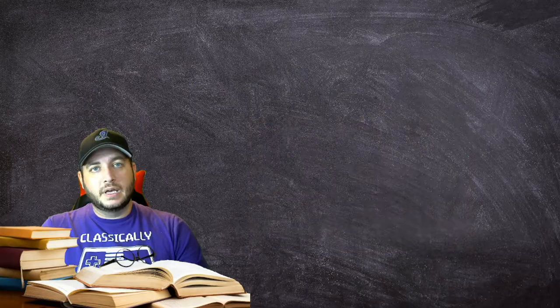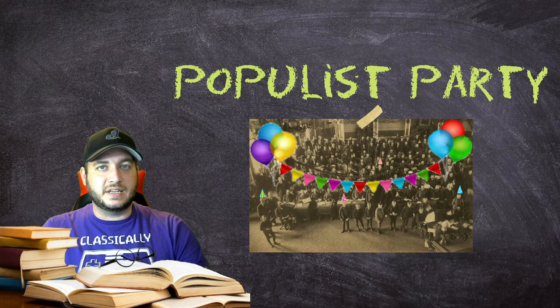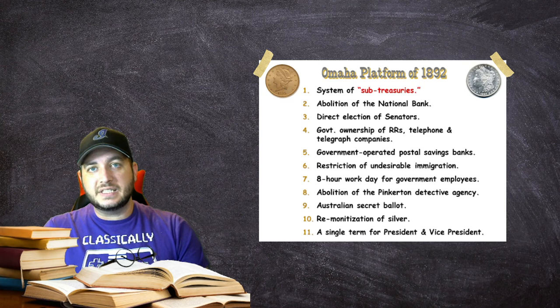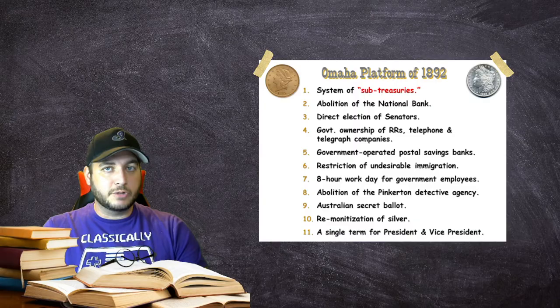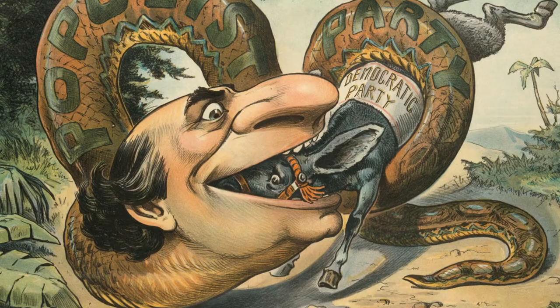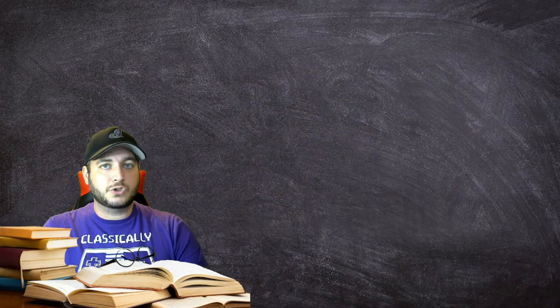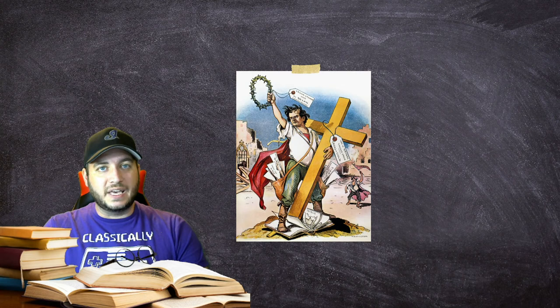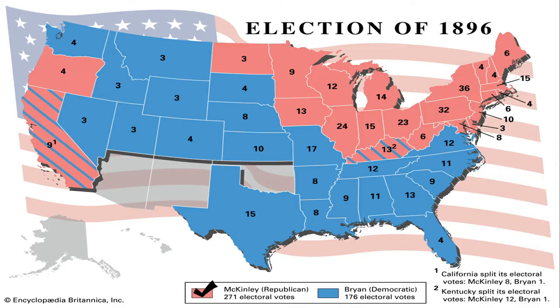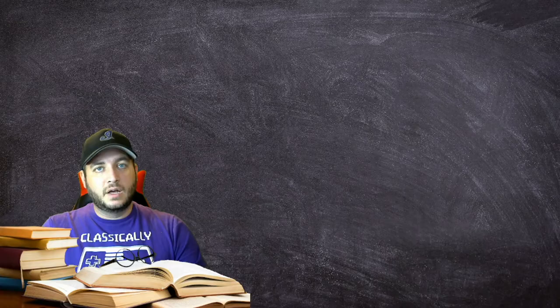The Populist Party was formed in the early 1890s to represent the interests of farmers and workers. The Omaha Platform of 1892 included far-reaching proposals later adopted, such as the direct election of U.S. Senators, a progressive income tax, the eight-hour workday, and restrictions on immigration. In 1896, William Jennings Bryan was chosen as the Democratic and Populist candidate for president after his famous Cross of Gold speech. His campaign focused on bimetallism — basing money on silver as well as gold to raise prices — but Bryan ultimately lost to William McKinley.